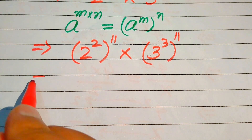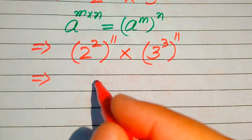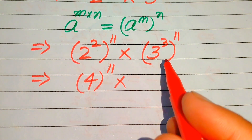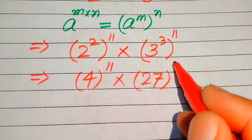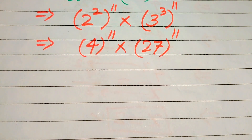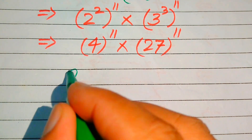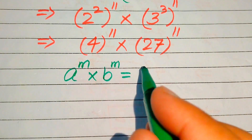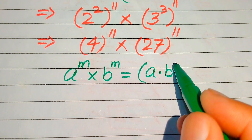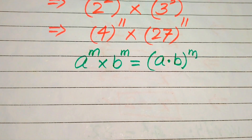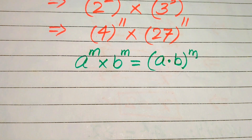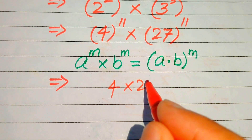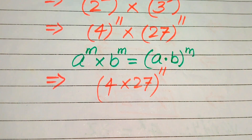In the next step, we simplify further. 2 squared equals 4, so we have 4 to the power of 11, and 3 cubed equals 27, so we have 27 to the power of 11. Then we use the exponential law: a to the power of m multiplied by b to the power of m equals (a multiplied by b) to the power of m. Combining the exponents gives us 4 multiplied by 27, whole power 11.